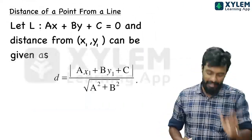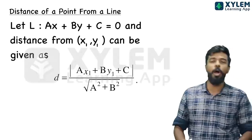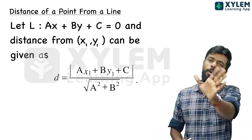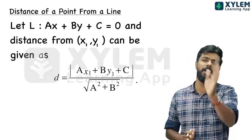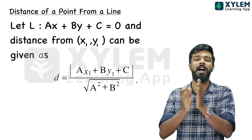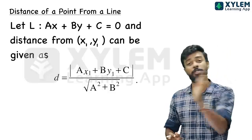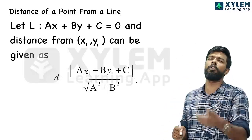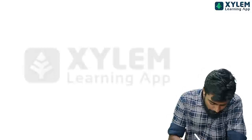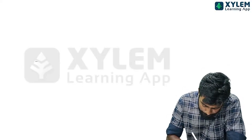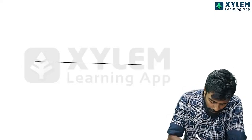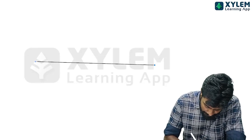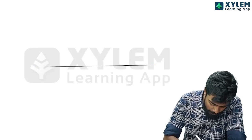We will discuss a topic about the distance of a point from a line. If you have a point and a line, we will answer all the questions in this chapter. Why do we have a formula? How do we have a line? Let the equation of a line be ax plus by plus c equal to 0.